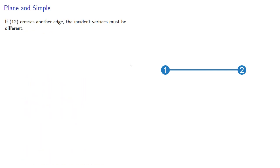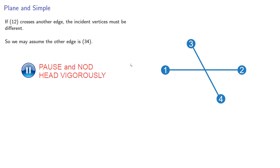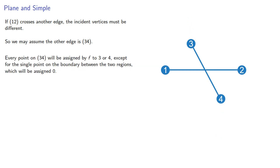Suppose our derived graph is not planar, and some edge crosses another edge. Every point on this edge will be assigned by our function to 1 or 2, except for the single point of the boundary between the two regions, which will be assigned 0. If 1, 2 crosses another edge, the incident vertices must be different. So we may assume the other edge is, say, 3, 4. Again, every point on the edge between vertices 3 and 4 will be assigned by our function to either 3 or 4, except for the single point of the boundary between the two regions, which will be assigned 0.